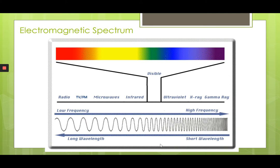Here you can see the electromagnetic spectrum. Radio waves have a very long wavelength and a very low frequency. Red is the color of visible light that has the longest wavelength and the lowest frequency — so one way to remember this is radio and red are long and low. Radio has the longest wavelength and lowest frequency in the entire spectrum, and red has the longest wavelength and lowest frequency in the visible portion. Gamma is on the opposite end, with the shortest wavelength and the highest frequency.